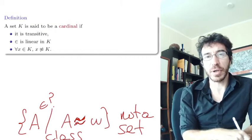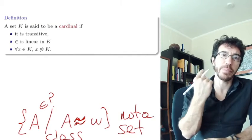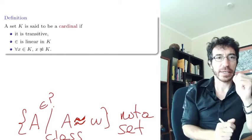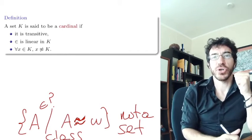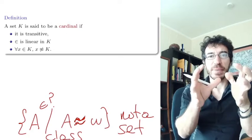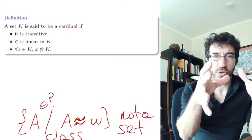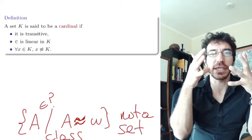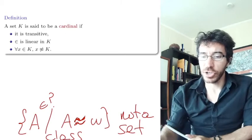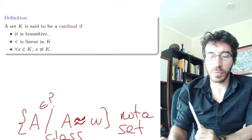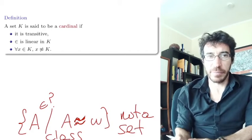So instead, what we're going to do to talk about cardinals is we're going to pick, for each size, a representative. A unique element we can define that is going to represent everything that has that size. And those are going to be what we call the cardinal numbers.